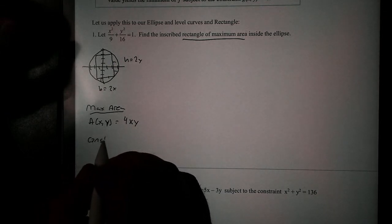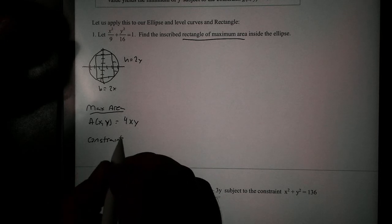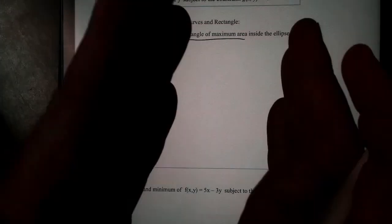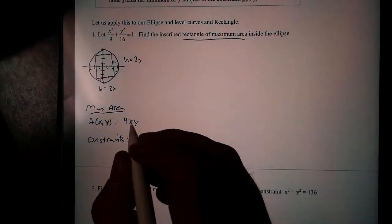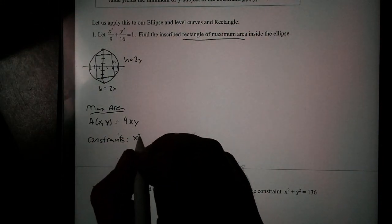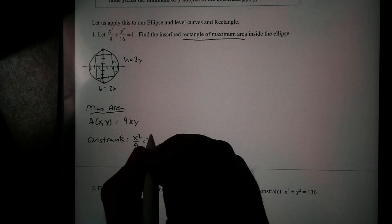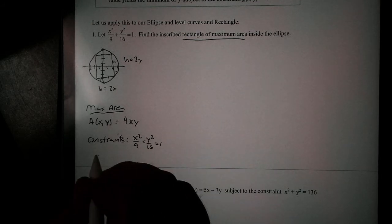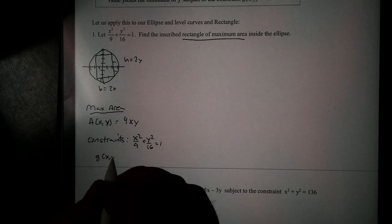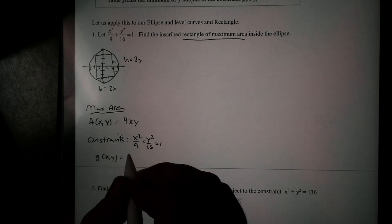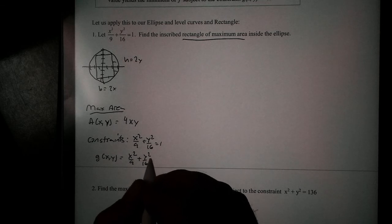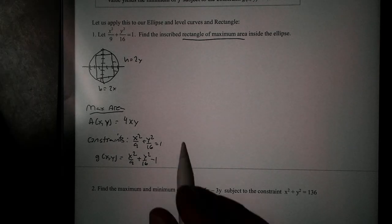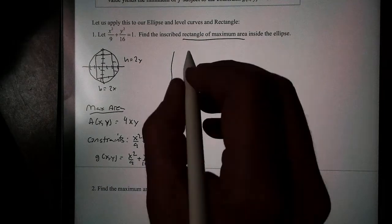Next, we're going to look at the constraints. Now, the constraint they tell me, what's going to constrain our rectangle is the ellipse. We can't get outside the ellipse. So that's my constraint. And that's the equation x squared over 9 plus y squared over 16 equal to 1. Now, I'm going to write this as an alternate function, g of x, y. And to do that, I'm just going to bring the 1 over: x squared over 9 plus y squared over 16 minus 1. And now we can start applying Lagrange's method.